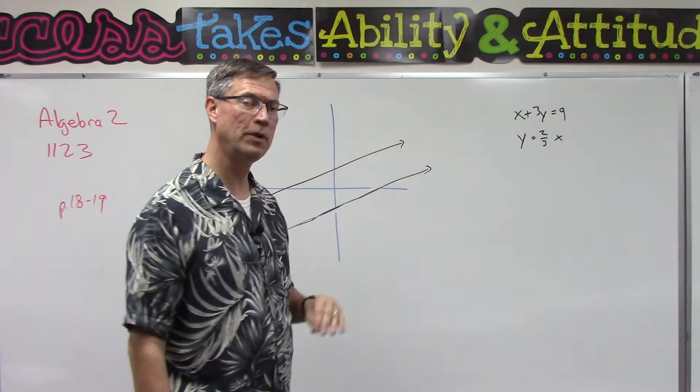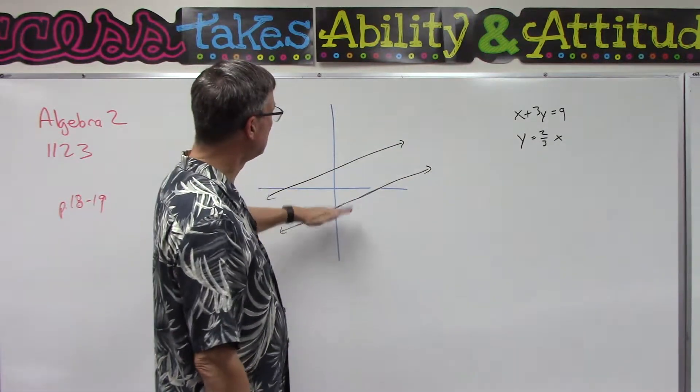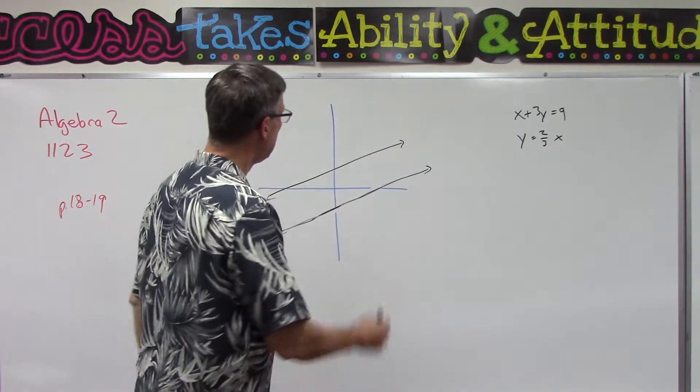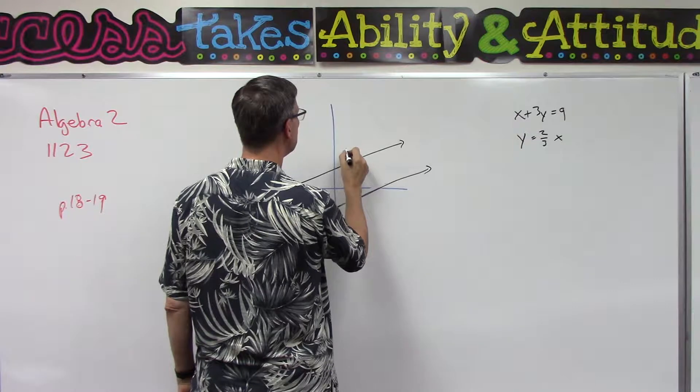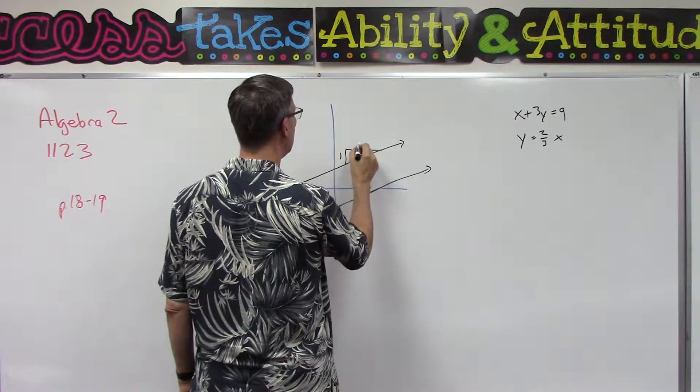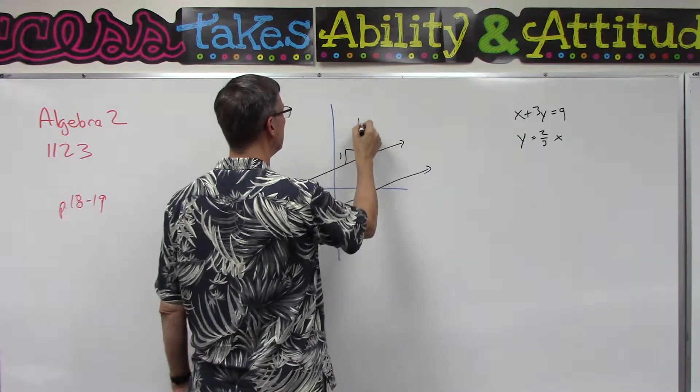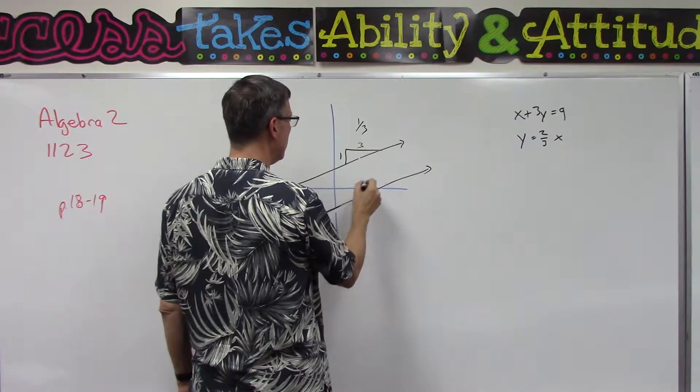If I have two lines that are parallel—I know I didn't do a very good job drawing that—but you see if they're parallel, and let's say on this line I determine that the rise over run is 1 over 3, okay?